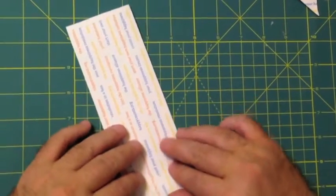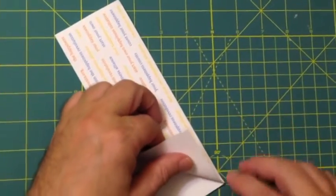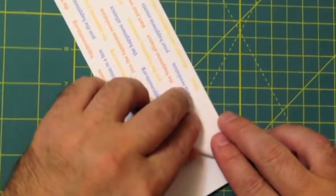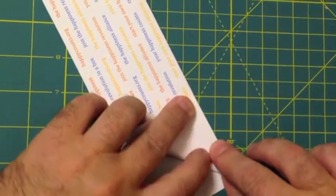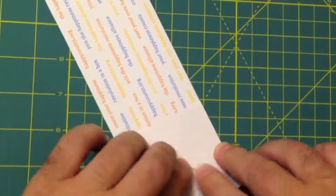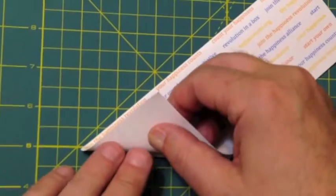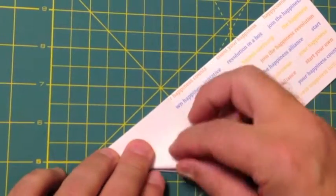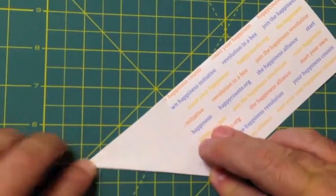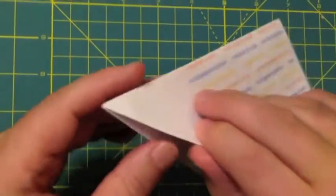And then you fold along the diagonal here. And then again on the opposite side. And you open this up.